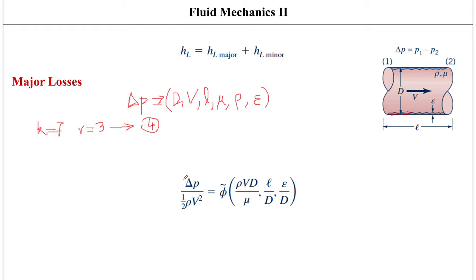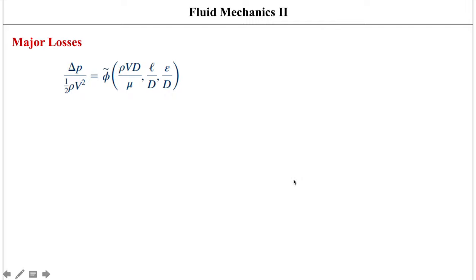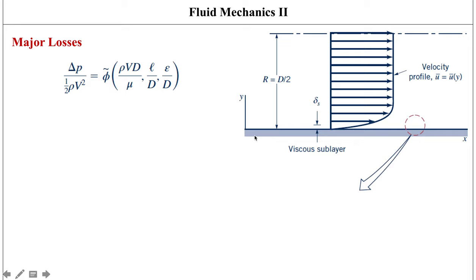One representation of these four dimensionless groups is: the first group is the dimensionless pressure drop term (pressure drop divided by dynamic pressure), the second is Reynolds number, the third is the length-to-diameter ratio, and the fourth is the relative roughness factor. We will discuss relative roughness in detail.